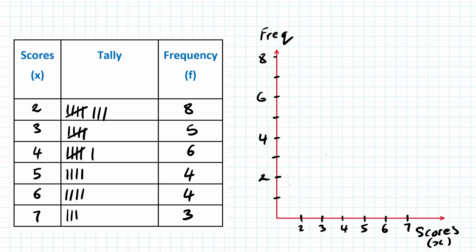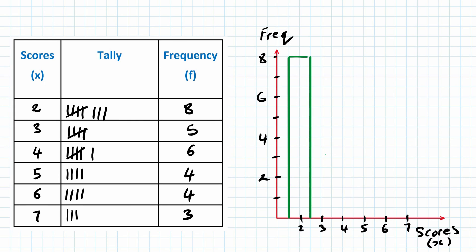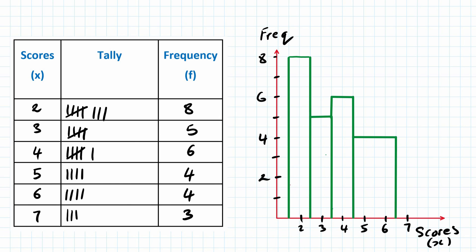Two is eight — so we always start between two and zero on the histogram. Start here and draw the bar all the way to eight. Three is five. Four is six. Five is four. Six is four — I can do these together. Seven is three. There you go — this is the frequency histogram.